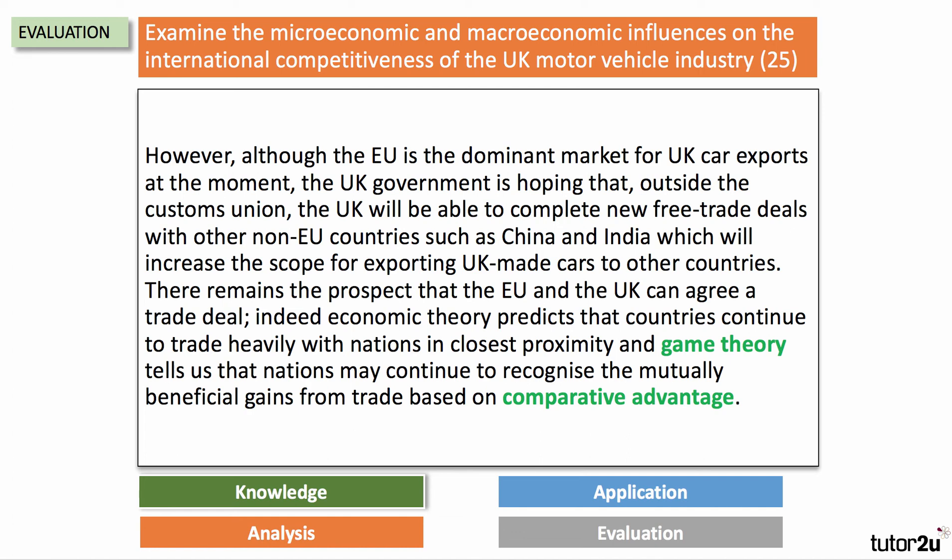Tariff-free access is clearly important for the competitiveness of the UK car sector, and a tariff diagram can be used here to illustrate how selling into the EU with a tariff is harder than without one. However, although the EU is currently the dominant export market, the UK government hopes that outside the customs union, Britain can negotiate new trade deals with China, India, and emerging Asia. Gravity theory suggests countries continue to trade most with geographically proximate partners, and game theory tells us nations may continue to recognise the mutually beneficial gains from trade based on comparative advantage.